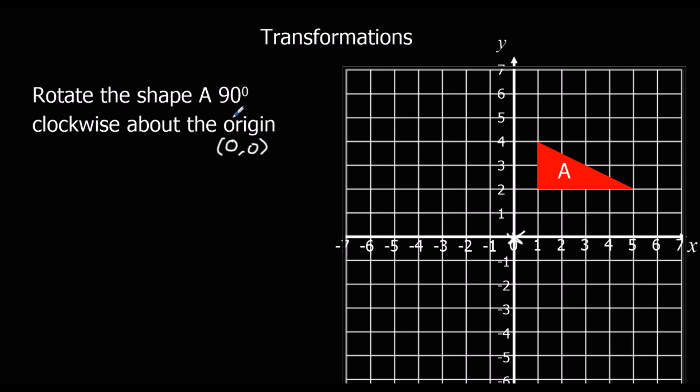It's asked to rotate it, that means spin it around 90 degrees clockwise. So 90 degrees is a quarter turn. If we're facing that way now, we're going to be facing that way after we've turned 90 degrees. And it's clockwise, so clockwise means the same way a clock goes round, that way round.